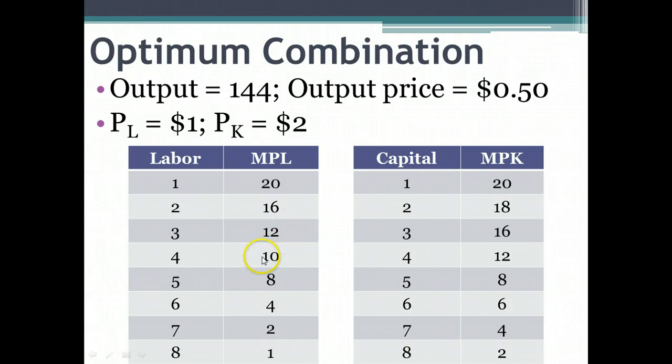It's not until I get to the fourth worker. When I hire the fourth worker, that person's marginal product per dollar spent is 10, and the marginal product per dollar spent for the first unit of capital is also 10. So I'm indifferent between the two, so I will choose to hire both the fourth laborer and a unit of capital. Then I stop and say, well, let's look.